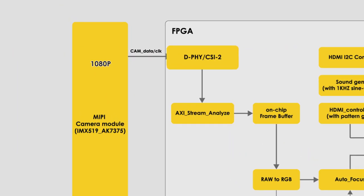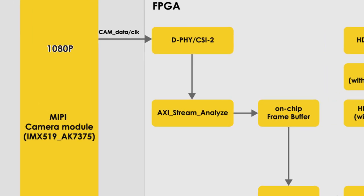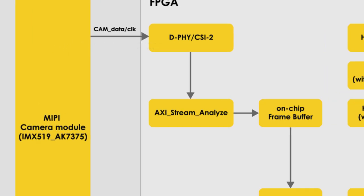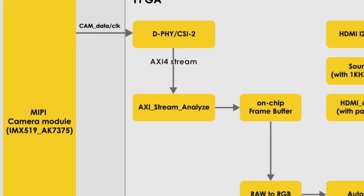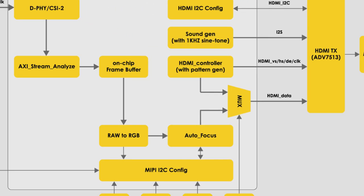The FPGA DPHY IP receives raw images from the IMX 519 image sensor. The FPGA CSI-2 IP then parses these images and outputs them in AXI 4-Stream format. The AXI Stream Analyze module analyzes the AXI 4-Stream image and stores the 10-bit Bayer pattern raw data into the on-chip memory buffer.